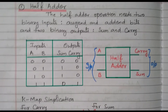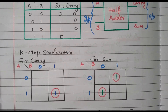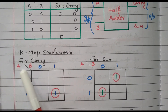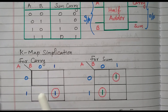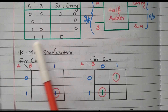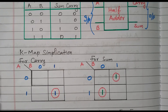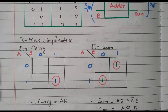Now we will verify the same using K-map. For the K-map for carry, we have two inputs A and B — A available vertically, B available horizontally. The carry is available only for the cell where both A=1 and B=1; all other cells are 0. So the expression for carry equals A·B.